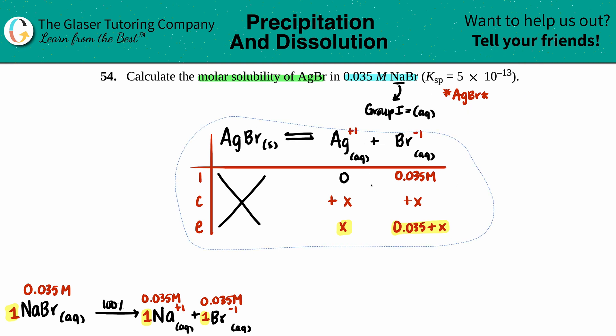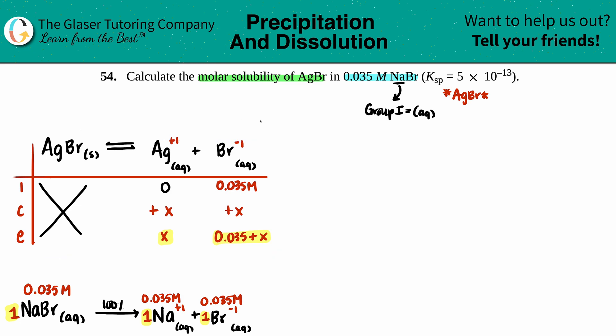Let's just pull this over because now I want to write the specific Ksp equation. Remember the general form is just equal to the products raised to the coefficients. So in this case I have Ksp equals the concentration of the two ions, so let's just do that. We got Ag+ times Br-. Ksp is 5 times 10 to the negative 13th.